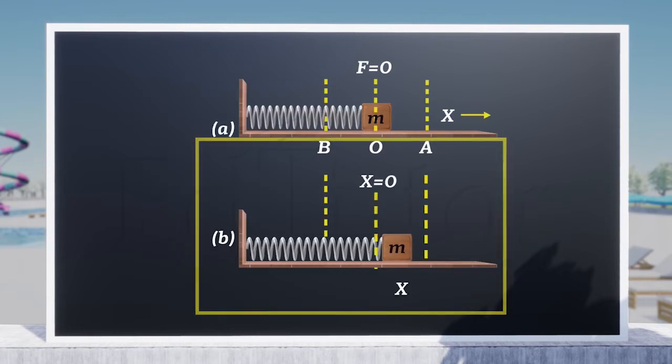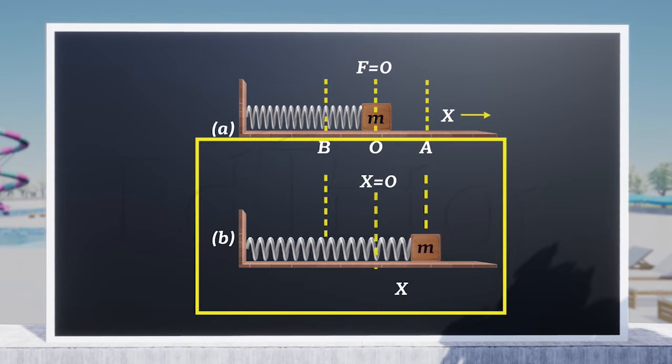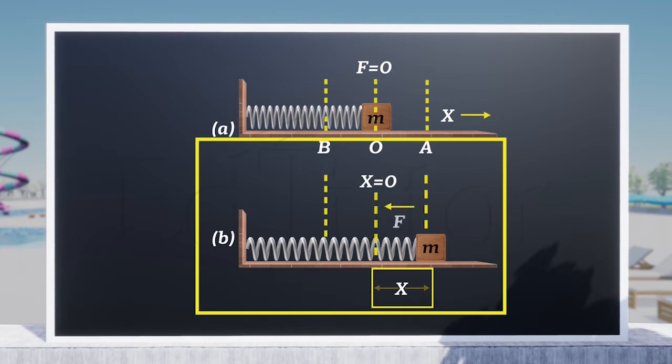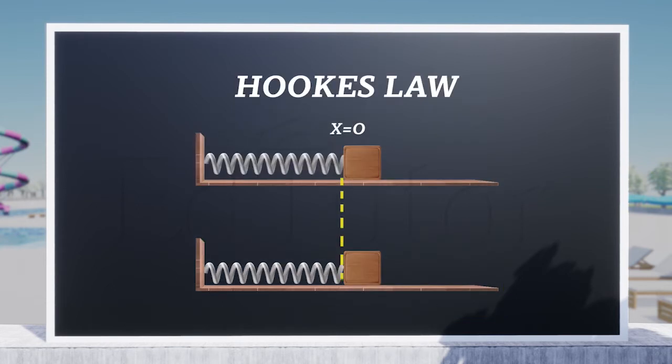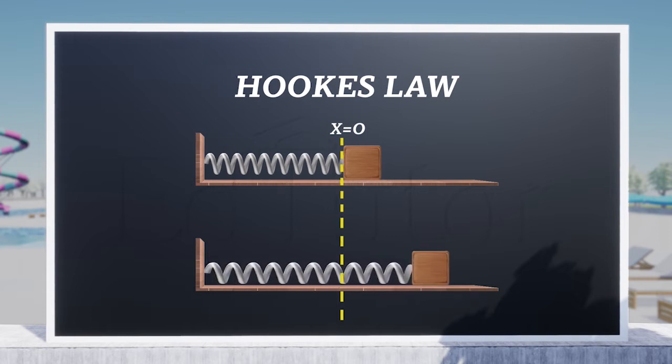If the spring is stretched or compressed through a small distance x from its mean position, the spring exerts a force F on the mass. According to Hooke's law, this force is directly related to the change in length of the spring, represented by x.